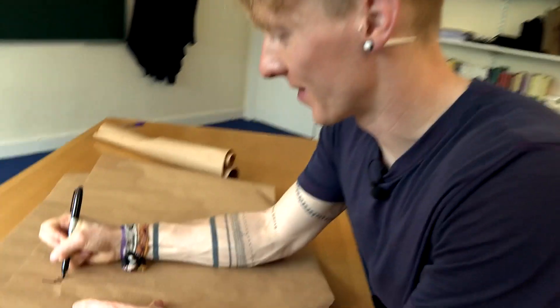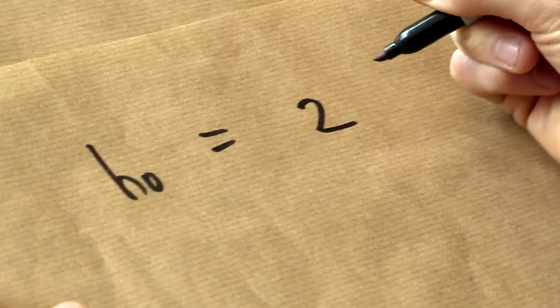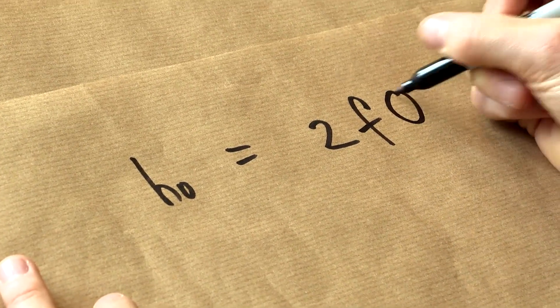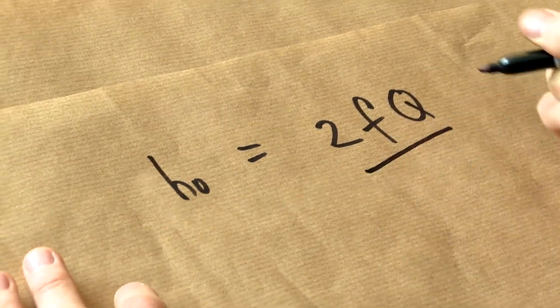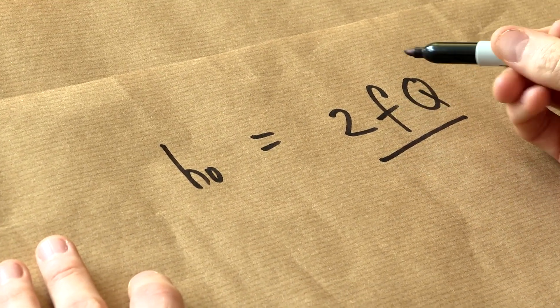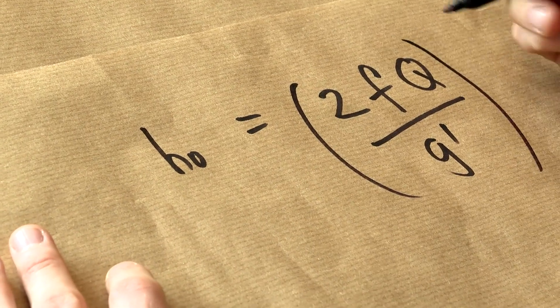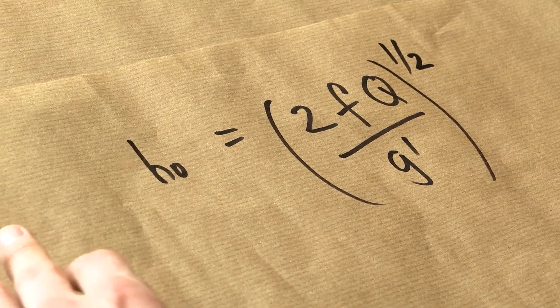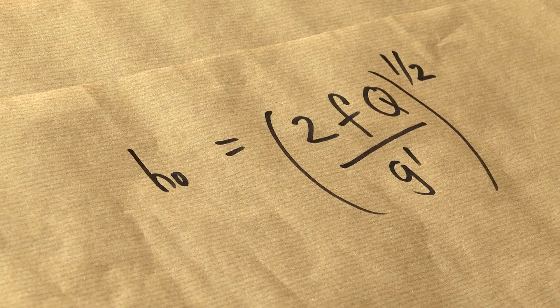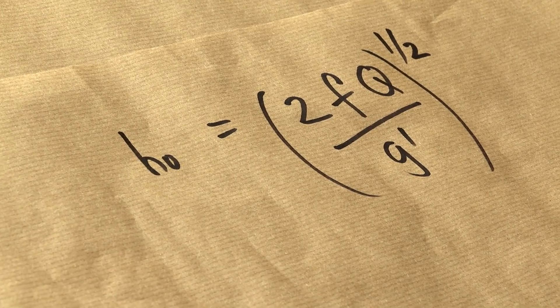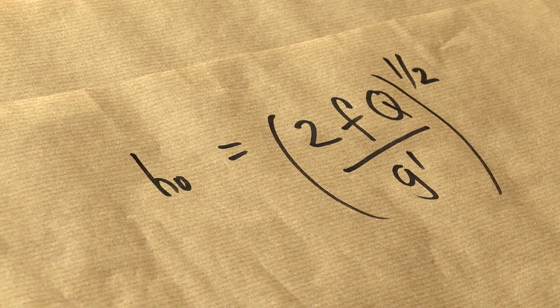And what we find, we get this really neat formula to say that the maximum depth, H0, is equal to two times the rotation rate times the volume flux divided by the density difference, all to the half. Even though we started with the Navier-Stokes equations, these incredibly complicated mathematical things we don't understand, it's amazing, genuinely amazing that this pops out from such a complicated set of equations.